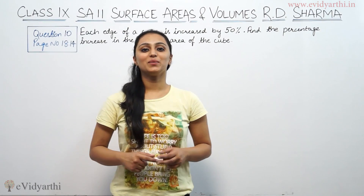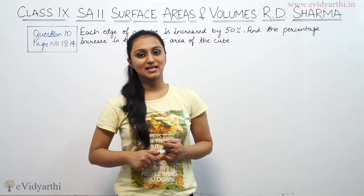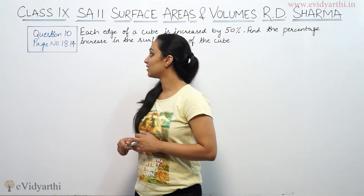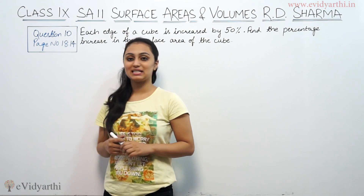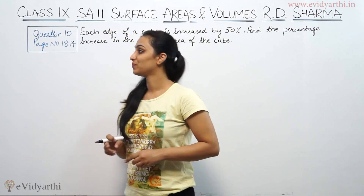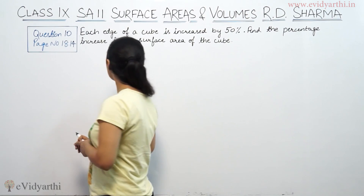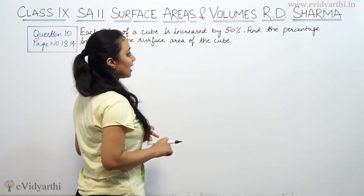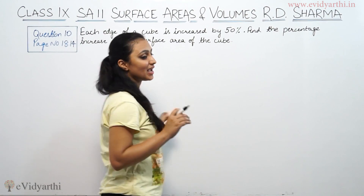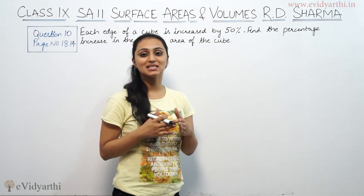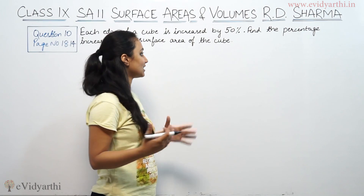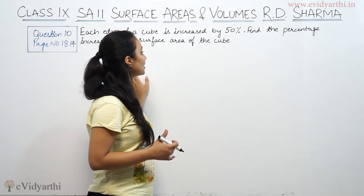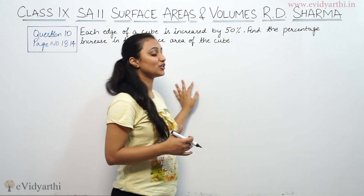Hi, this is Khush with another question on surface areas and volumes. This is question number 10 from R.D. Sharma, page number 18.14. It says: each edge of a cube is increased by 50%. Find the percentage increase in the surface area of the cube.